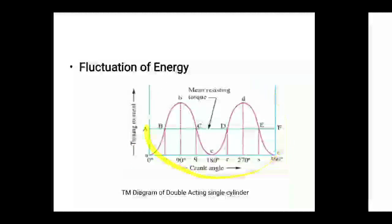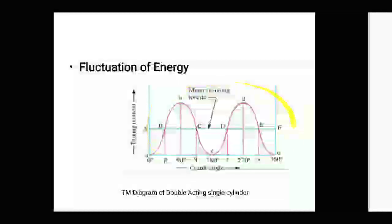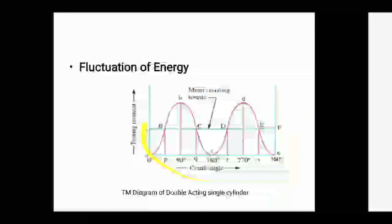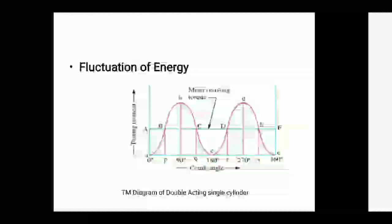This will totally become one complete cycle. Now, since the work done of the turning moment and the crank angle are related, the areas of the turning moment diagram represent the work done per revolution.